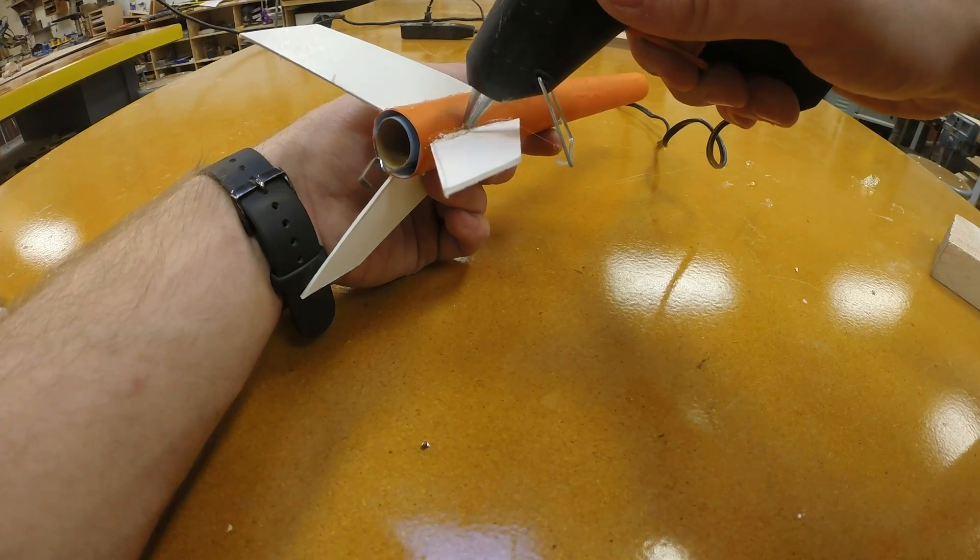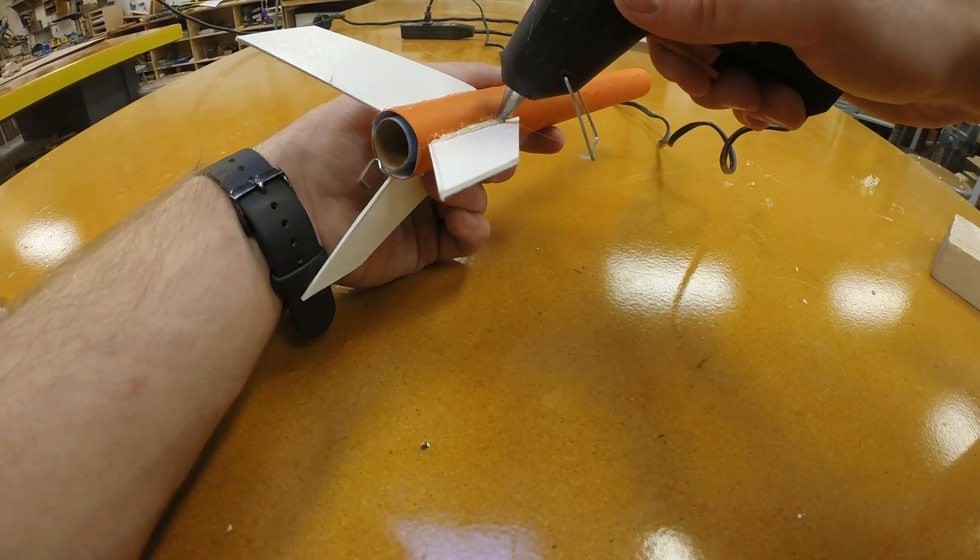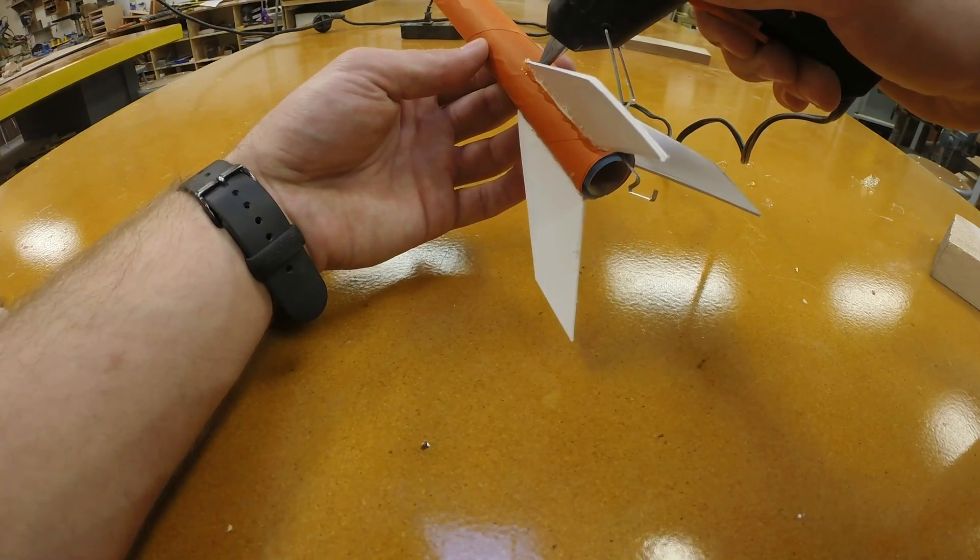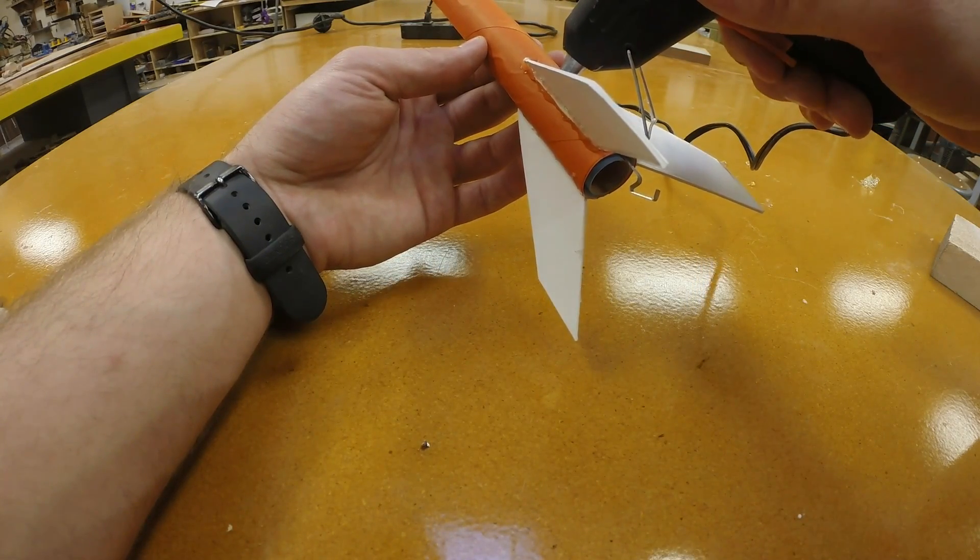Once your fins are properly aligned it would be a good idea to add a little bit of extra glue on both sides of the fin as reinforcement so the fin doesn't want to break off if it accidentally crashes.